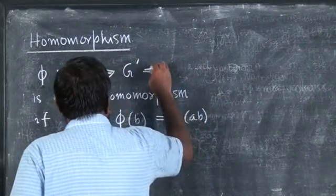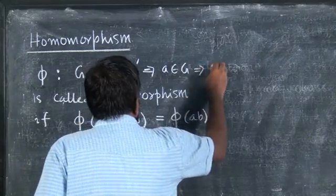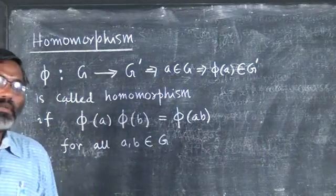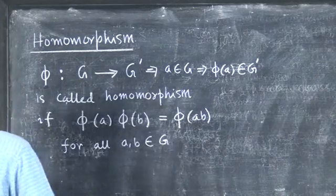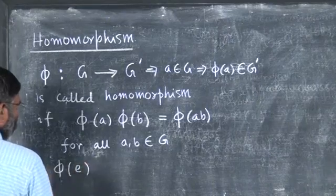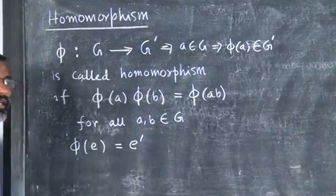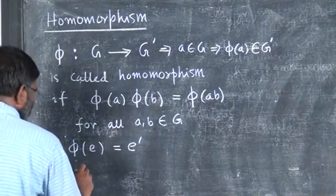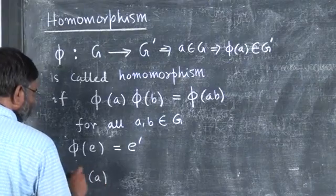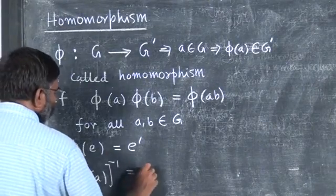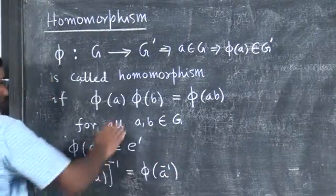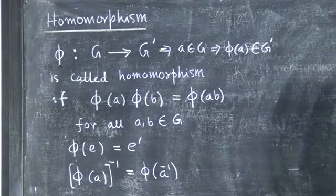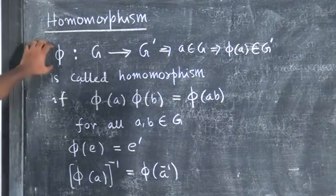When I say this, what does it mean? If a is in G, then φ(a) is in G-prime. Also, φ(e) should equal e-prime — identity maps to identity — and φ(a⁻¹) = (φ(a))⁻¹. If we write these properties then we can be guaranteed that this mapping preserves the group multiplication table. A mapping which satisfies these conditions is called a homomorphism.